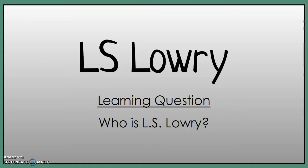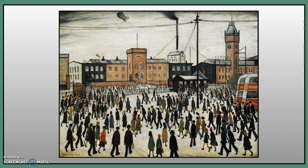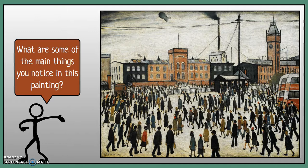This is the first image from L.S. Lowry that we're going to look at, and we're going to think about what he's included in this image, how you would describe the content, and why you think the painter is actually creating this image. Looking at this image, what are some of the main things you notice? Think about the items, the people, the objects, the buildings that you can spot — the nouns that you can identify in this image.